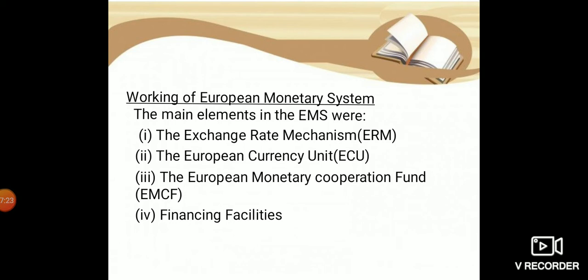The third element is the European Monetary Cooperation Fund (EMCF), an important part of the EMS. It was a fund established in 1973 by members of the European Exchange Rate Mechanism to stabilize exchange rates. In other words, it was a fund in which European Union members deposited reserves to provide a pool of resources to stabilize exchange rates and finance balance of payments support.